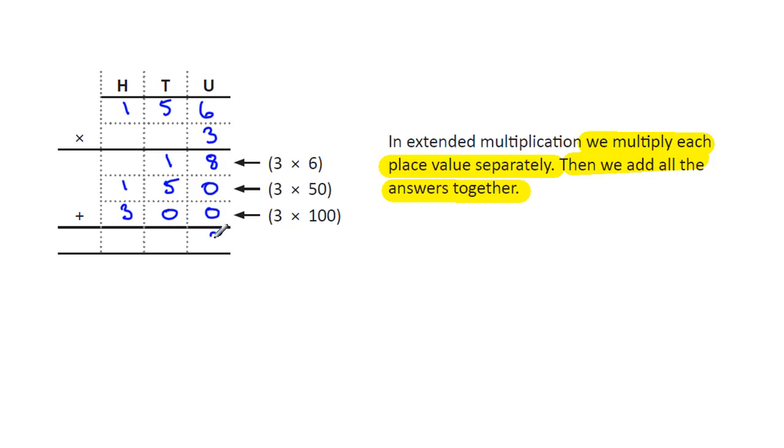And finally here we have 1 in the hundreds column, so that's 3 times 100 which is 300. So we now add these columns up: 8, 5 and 1 is 6, 3 and 1 is 4, and we get the answer 468. This is called extended multiplication, and remember we multiply the whole number out one by one separately and then add the answers together.